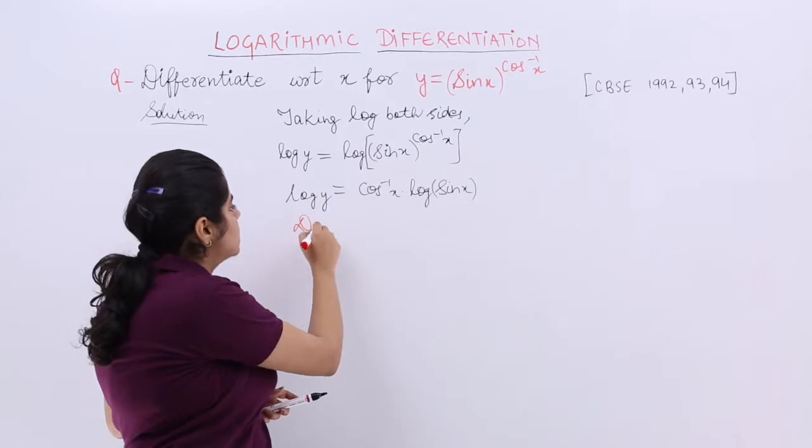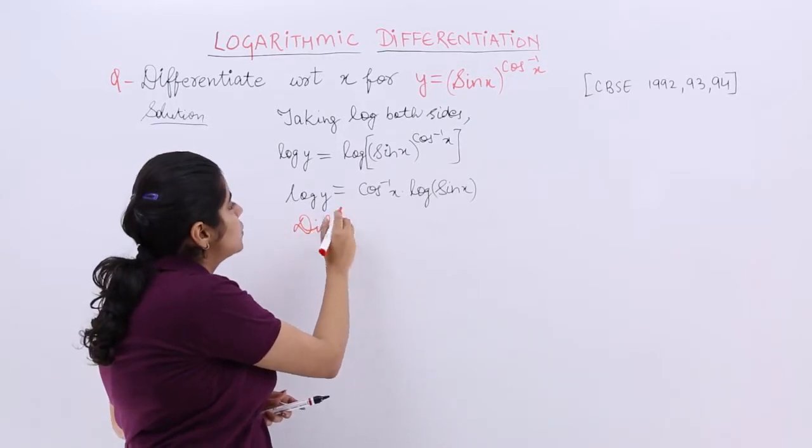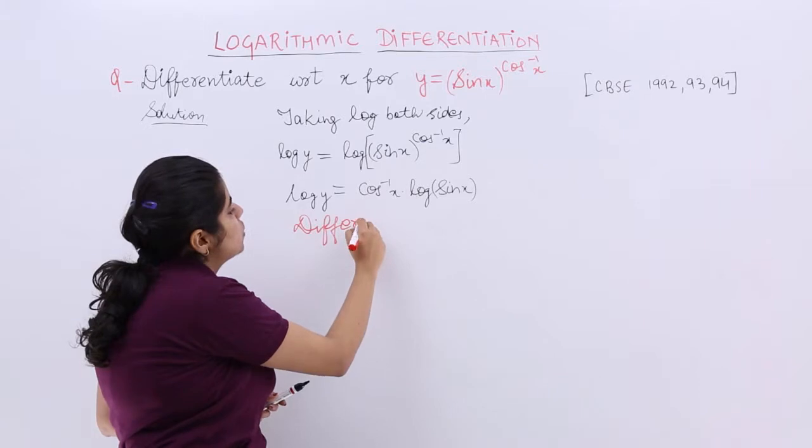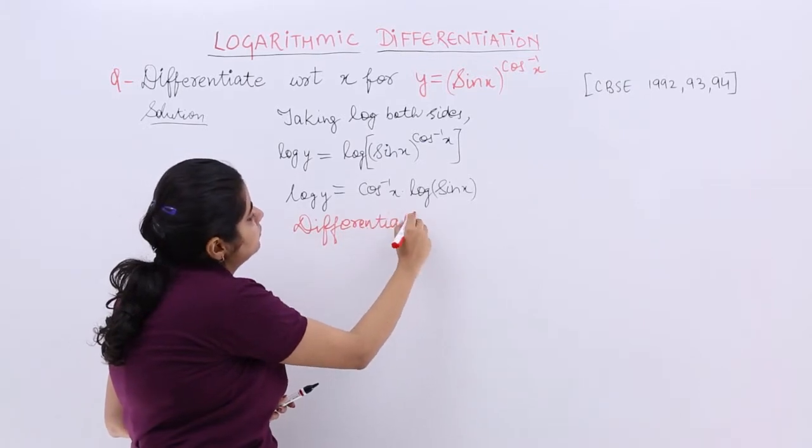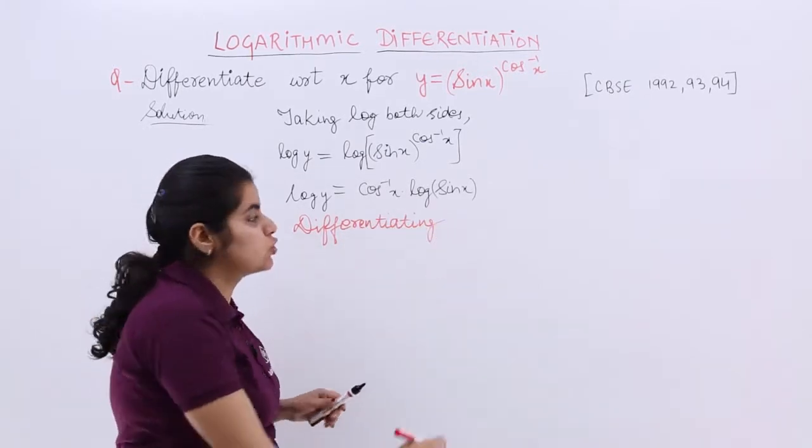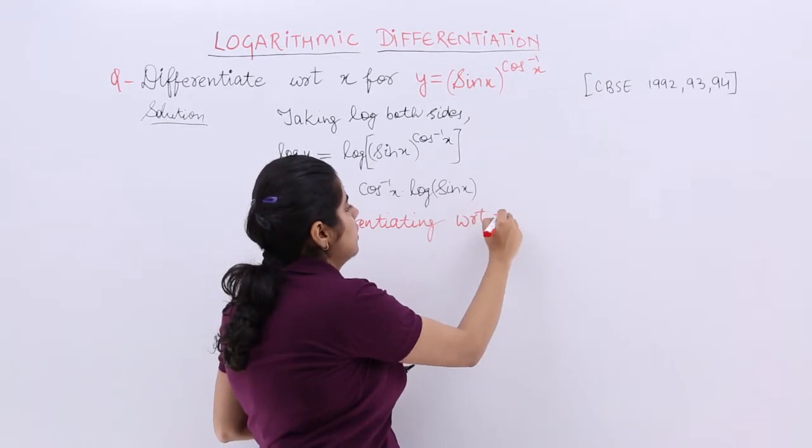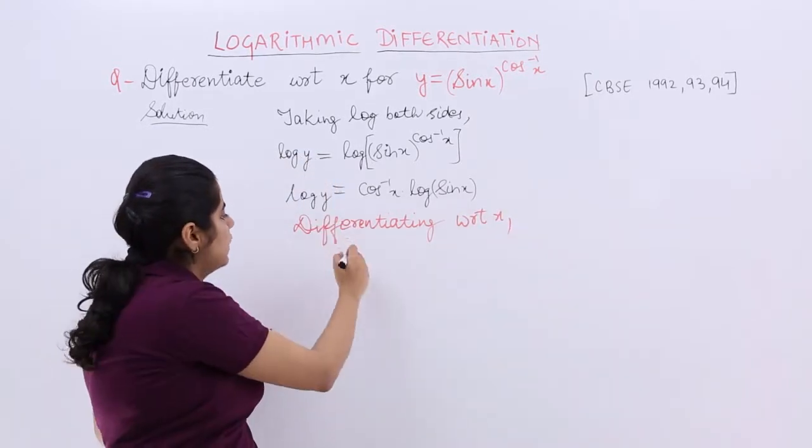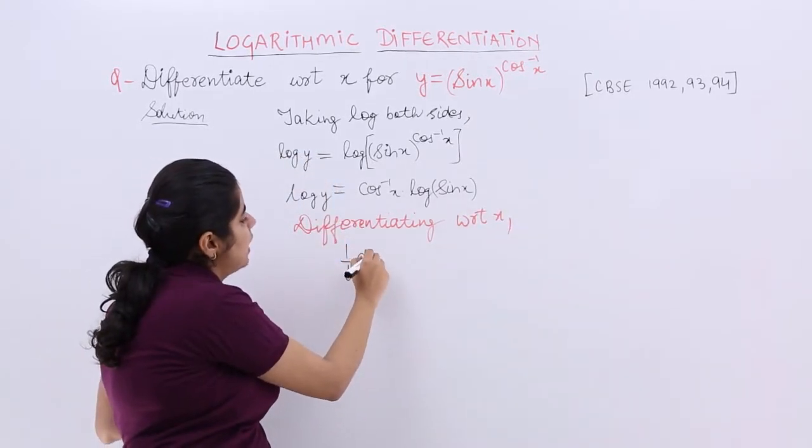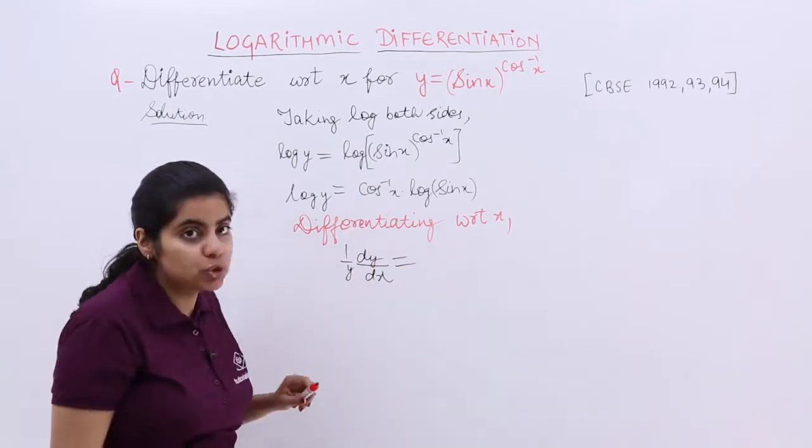Now you have to differentiate y because the question asks you to find out the differentiation. So differentiating with respect to x, it is what? It is nothing but log y so it becomes 1 by y dy by dx is equal to.